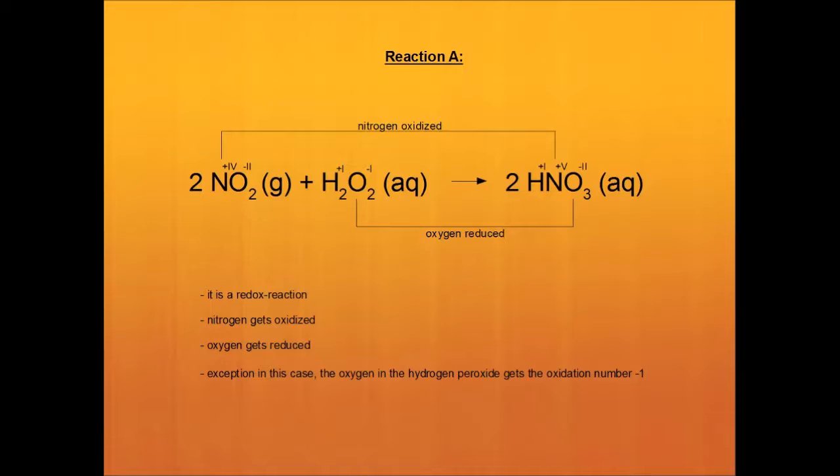As we can see, the oxidation number of nitrogen undergoes a change from plus 4 to plus 5, and the oxidation number of oxygen changes from minus 1 to minus 2. In this case, hydrogen peroxide is an exception. Oxygen has an oxidation number of minus 2, but in hydrogen peroxide it is minus 1.